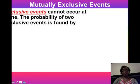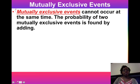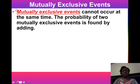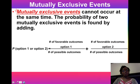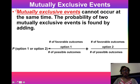Let's move on to the next type of simple event: mutually exclusive events. This is on the back of your video notes sheet — flip it over to get the definition. Mutually exclusive events cannot occur at the same time, and the probability of two mutually exclusive events is found by adding. The formula takes the favorable outcomes for option one plus the favorable outcomes for option two over the total number of possible outcomes.